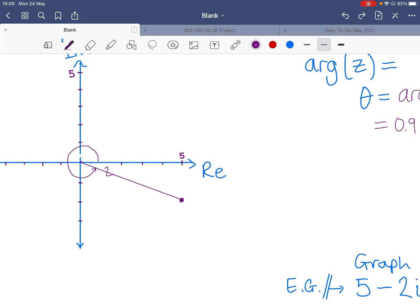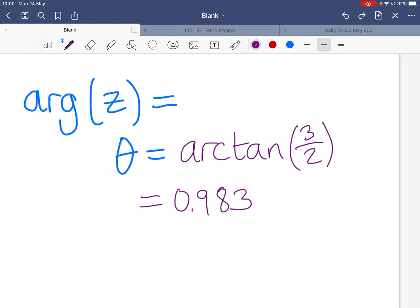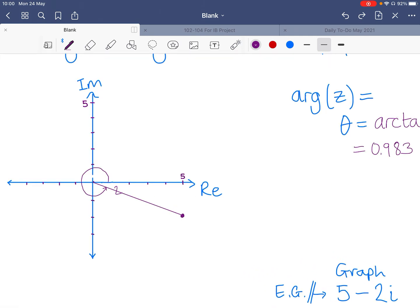And so, well, what is this angle going to be? Well, you can still go with arctan of the imaginary part over the real part.